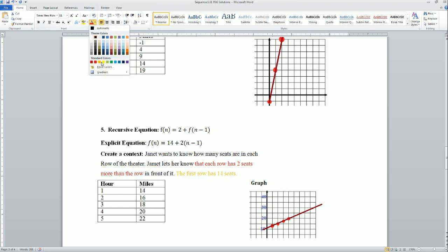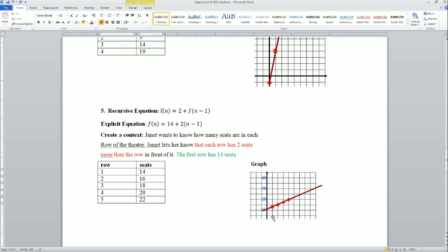The first row has 14 seats, which is going to be represented as the y-intercept, so you plug it in. You could write this in y equals mx plus b if you want. In our case, this shouldn't be miles; this should be row, and this should be seats. The first row has 14 seats, second row 16, and so on. Here's the graph—it goes from here, it goes up.